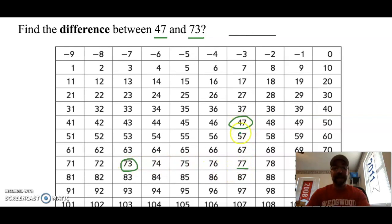So 10, 20, 30. So if I reach 30, I now have to count backwards to get to 73. So 10, 20, 30, 29, 28, 27, 26. So I got 26.